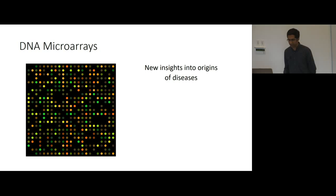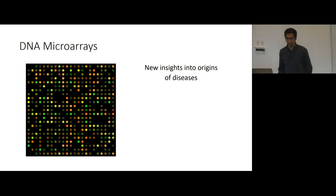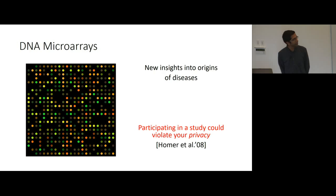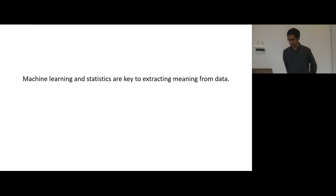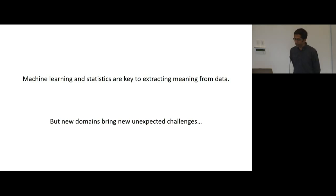Recent advances in fabrication have allowed us to make DNA microarrays, which allow us to do gene expression studies. These give us insight on the origin of a number of diseases and their genetic origins. The issue is that this genetic information is very valuable and very personal. For example, if you're participating in a study for individuals who are HIV positive, you perhaps would not want it to be known that you participated, as this is a socially stigmatic disease. It was shown by Homer et al. in 2008 that participating in some of these studies can allow re-identification of who participated.